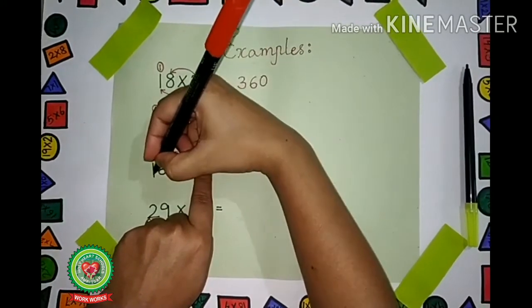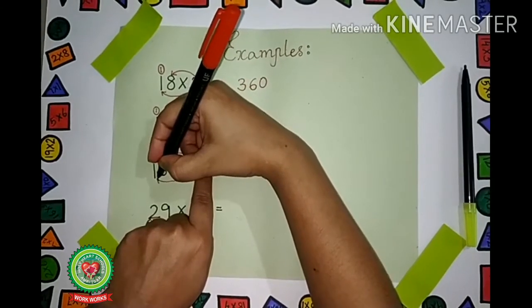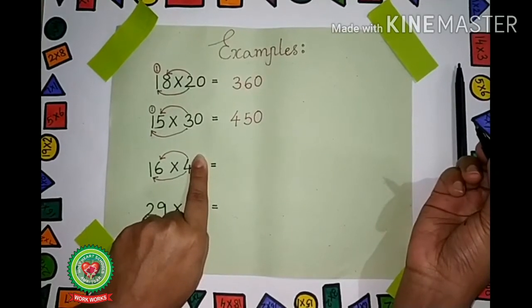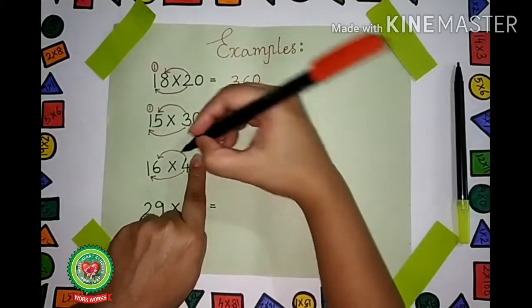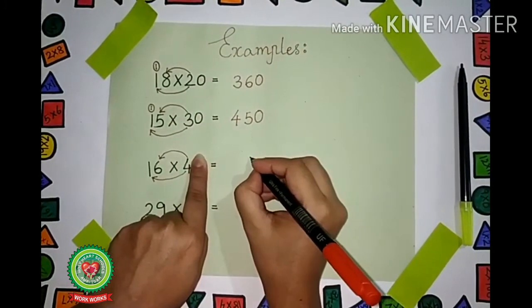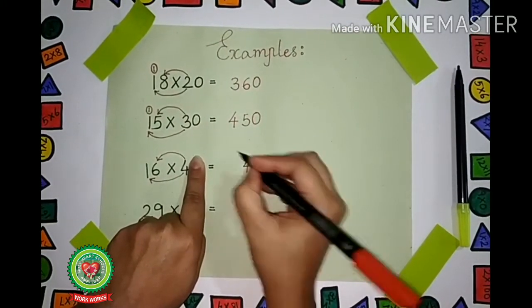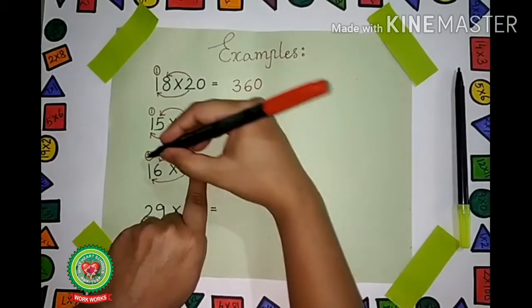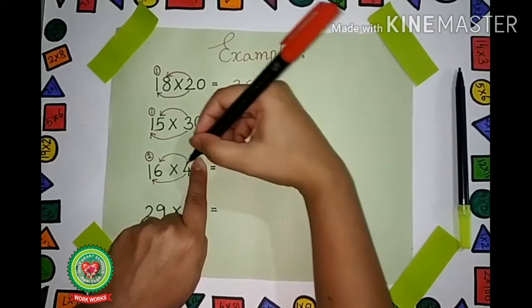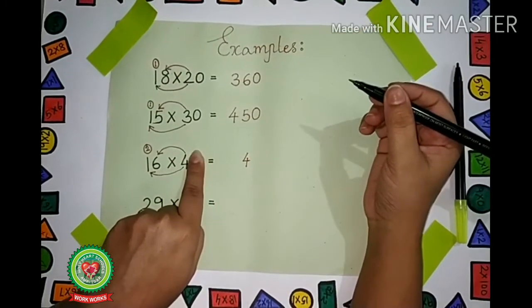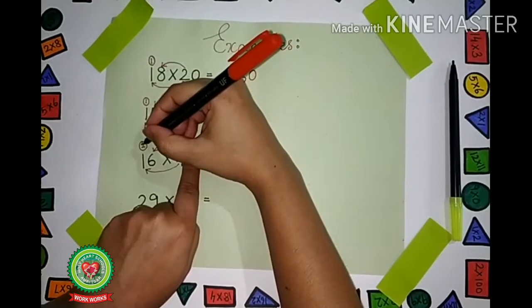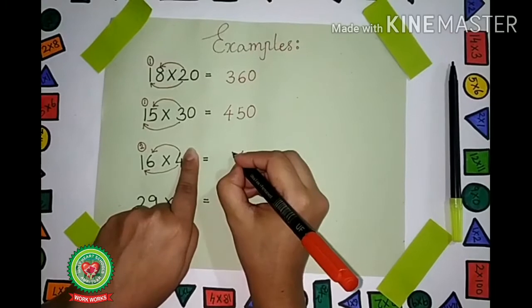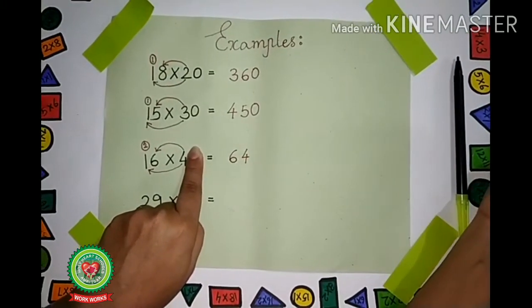Then 4 with the next digit. Now, what is 4 × 6? Read the table of 4 till 6. 4 × 6 are 24. Write 4 over here and 2 carry. Now 4 × 1 are 4, plus 2 carry is 6. Write 6 over here. The number is 64.